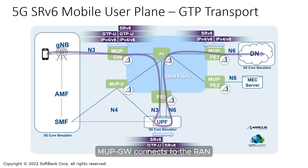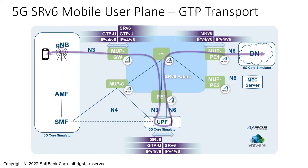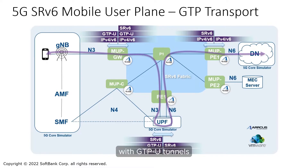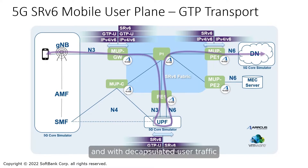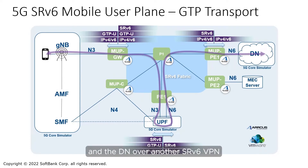MUP gateway connects to the RAN on the N3 interface, carrying GTPU tunnels over an SRV6 VPN to PE1. PE1 connects to the 5G UPF with GTPU tunnels to the RAN on the N3 interface, and with decapsulated user traffic to and from the external data network, DN, on the N6 interface, which is delivered to MUP PE1 and the DN over another SRV6 VPN.